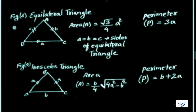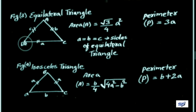We know that there are three types of triangle: scalene triangle, equilateral triangle, and isosceles triangle. We will begin by finding the area of a scalene triangle. Now for the equilateral triangle — in an equilateral triangle, all three sides are equal. Given triangle ABC, every side is equal: AB equals BC equals AC.